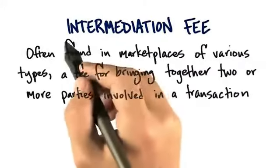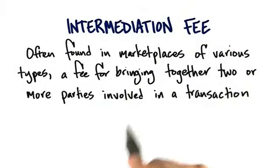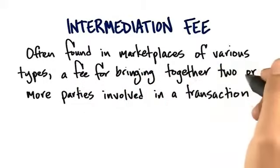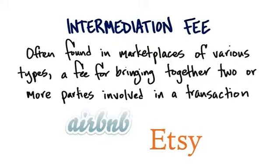Another type of revenue strategy could be an intermediation fee. Sometimes we find this in marketplaces — it's a fee for bringing two parties together involved in a transaction. The most popular example right now is Airbnb. They don't own all those places they're renting; they're essentially a dating service between you and someone who wants to make money renting their apartment. Other examples include Etsy, Cafe Press, E-Trade — all brokers. And in the physical world, the classic is real estate brokers: they match you with the property you want to buy.